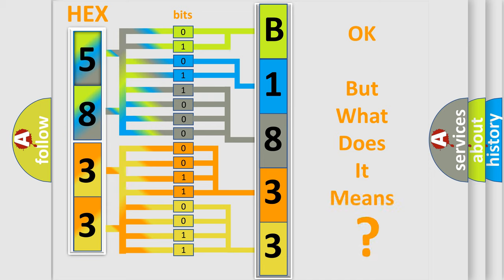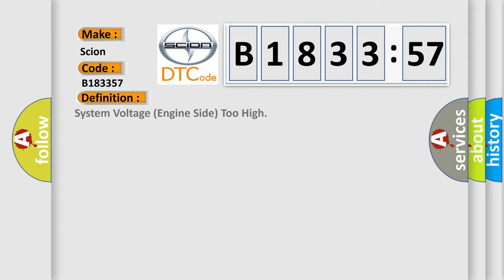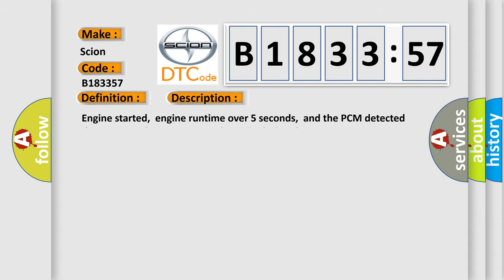The number itself does not make sense to us if we cannot assign information about what it actually expresses. So, what does the diagnostic trouble code B183357 interpret specifically for Scion car manufacturers? The basic definition is: system voltage engine side too high.